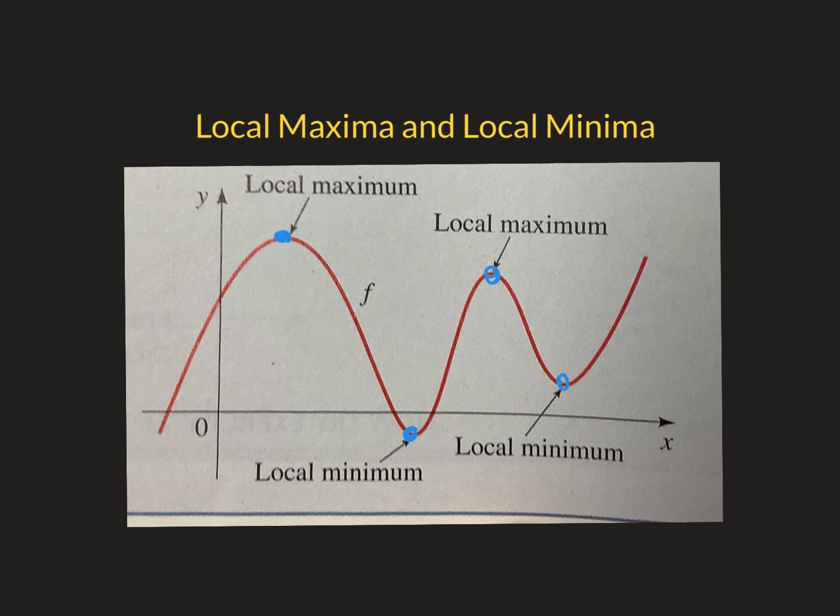And the reason I call it local is because the graph, if you look at this, that graph, you know, the arrows aren't there. They should be. It's going to keep on going down on this end and keep on going up on that end. So it's not the absolute top of the graph or absolute bottom of the graph.